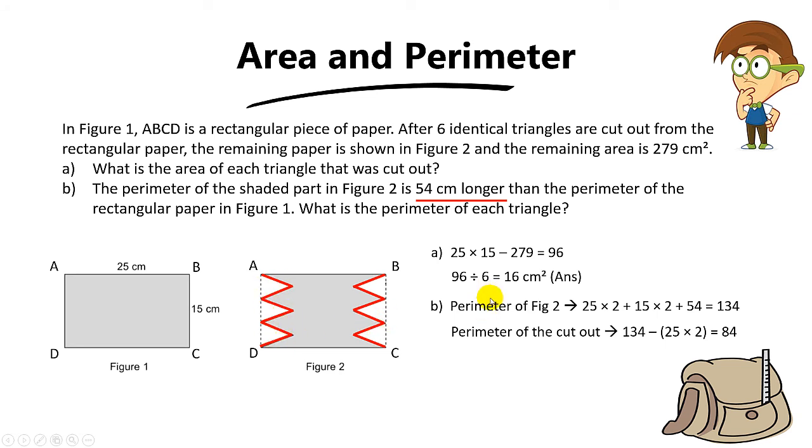Of course, if you don't want to do it like this, you can also take a shortcut and basically take 15 plus 15 then plus 54. You will still get 84 cm, and that's the length of the red colored lines.